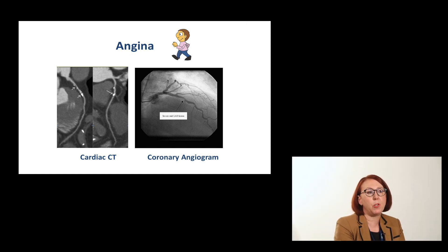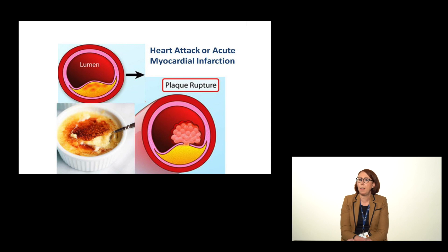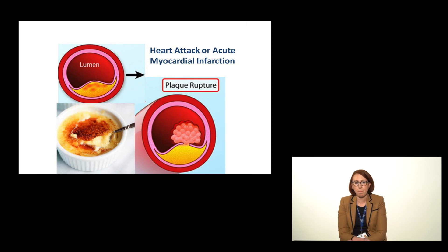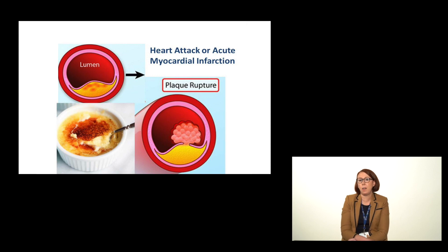Now let's look at what else can happen to plaque as it develops. In the last slide we saw how plaque can progressively narrow the artery causing angina, but sometimes plaque can cause trouble and they're not narrowing the artery. Here you can see on the left plaque build up again. The plaque in many ways is a bit like a creme brulee — it's hard on top but gooey and soft on the inside, and in some patients that hard top can crack, and we call that plaque rupture. Your body's response to that plaque rupture is like when you cut your hand or your finger and you clot it, and now you can see there's a blood clot building quite quickly on top of the ruptured plaque, and it is the blood clot that blocks the artery.